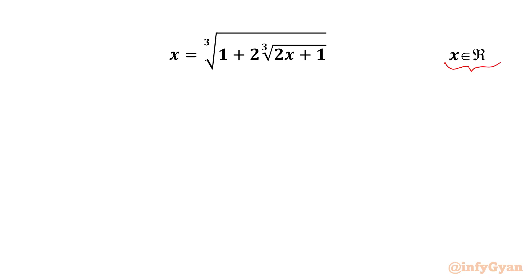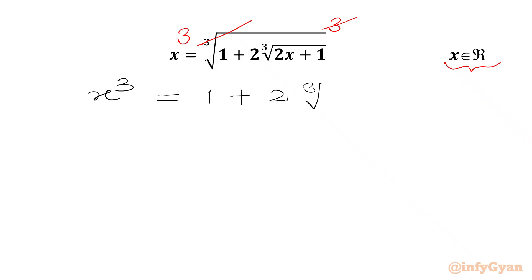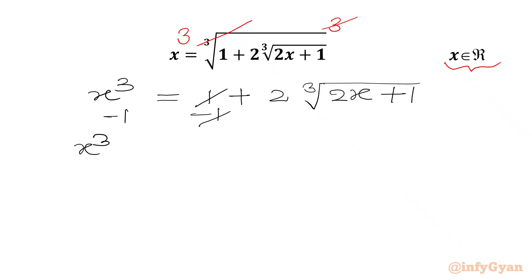Let's get started by considering power 3 on both sides. The cube root and cube will cancel out from the RHS. We write our equation X cube equal to 1 plus 2 times cube root of 2X plus 1. Now we will subtract 1 from both sides, so plus and minus 1 will cancel from RHS. We can write X cube minus 1 equal to 2 times cube root of 2X plus 1.